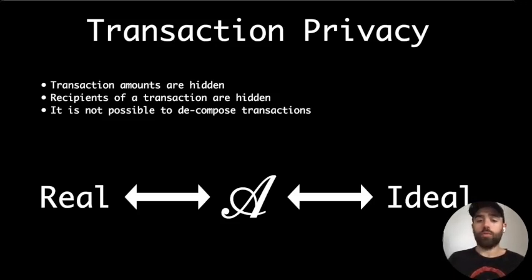Our new notion of privacy says that not only the values in a transaction are hidden, but also that it is not possible to decompose an aggregate transaction relating inputs and outputs that belong to the same simple transaction. Also, we enforce that recipients of transactions are hidden, and only the recipient can understand what's happening in a particular transaction output.